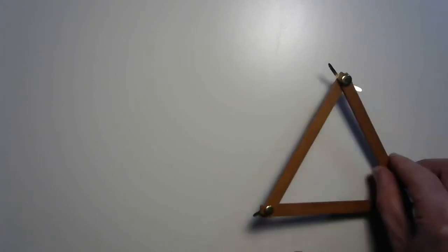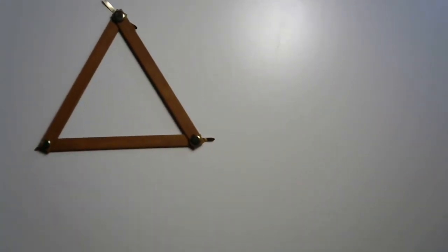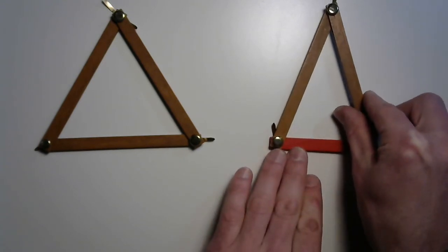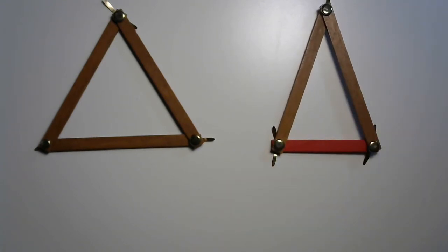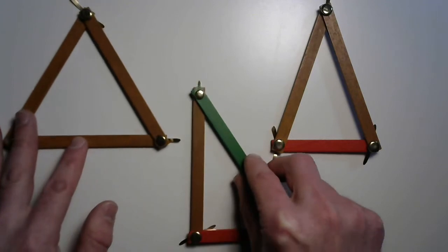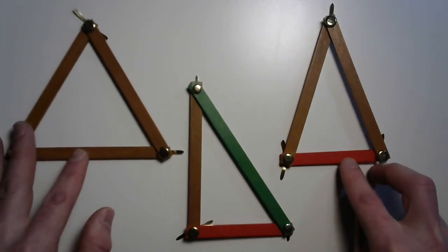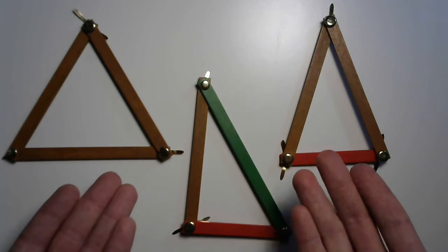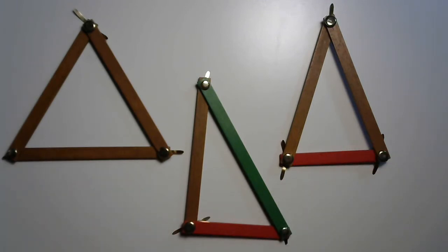The first looks like this, the second looks like this, and the third looks like that. What do you notice about these triangles? What jumps out at you immediately?